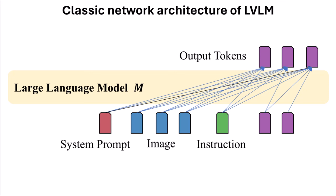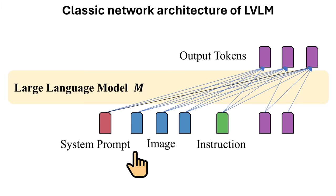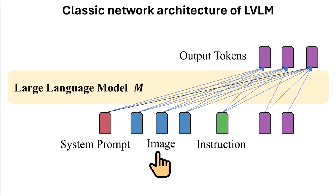Initially, they give some preliminary knowledge of how the classic network architecture of LVLMs works. There are 4 different types of tokens: image tokens coming from the output of some encoder which encodes features from an image; instruction tokens from the user asking questions; system prompt tokens which exist in large language models as a general message to control LLM behavior; and output tokens. Having all these system prompt, image, and instruction tokens as input, we can construct the first output token.